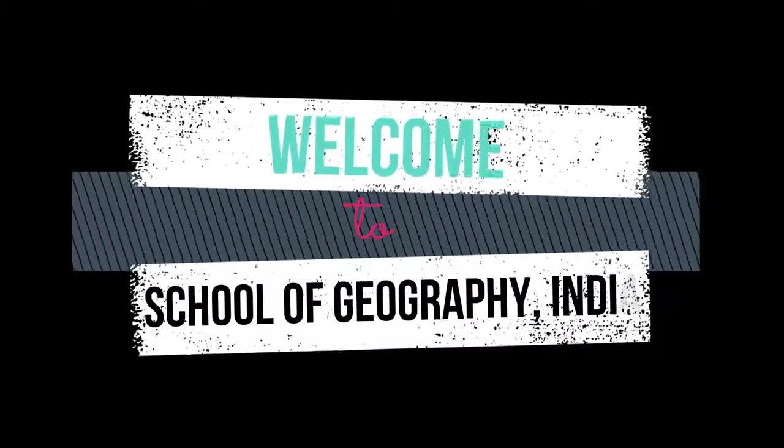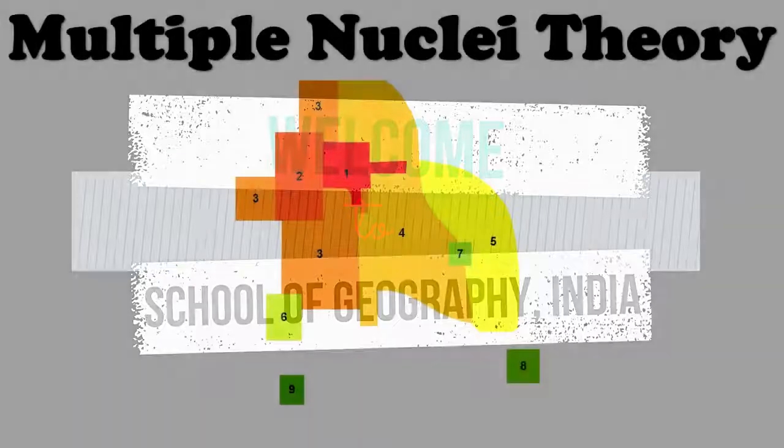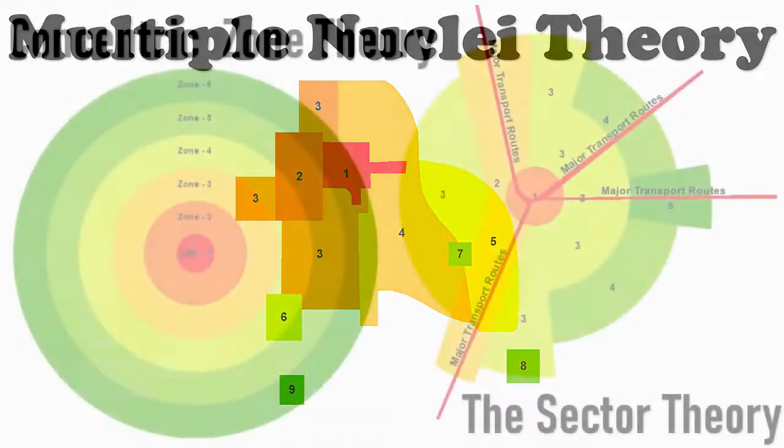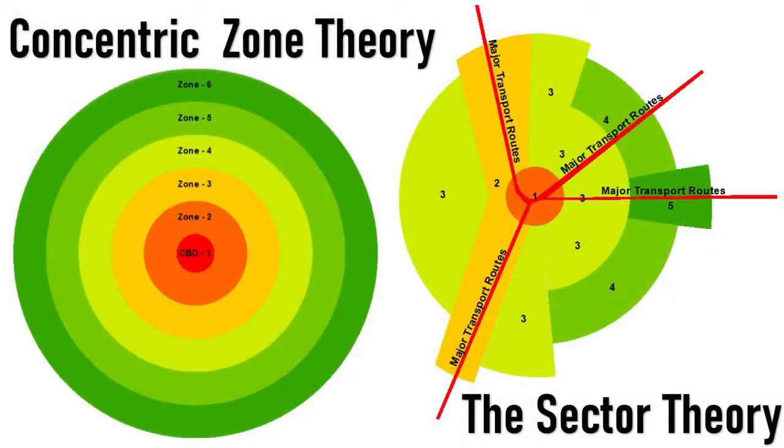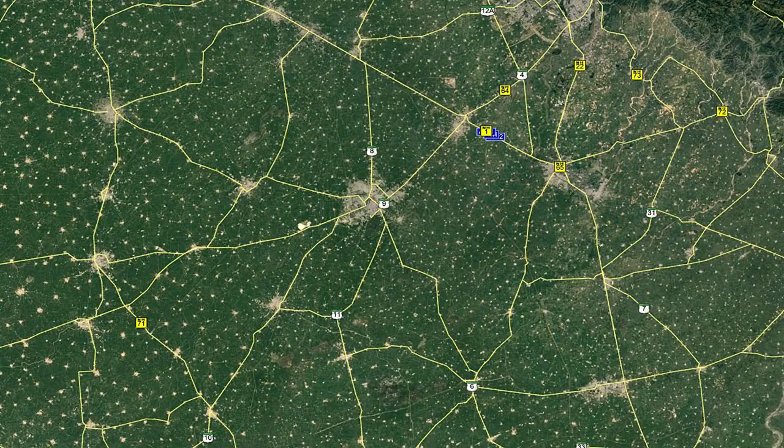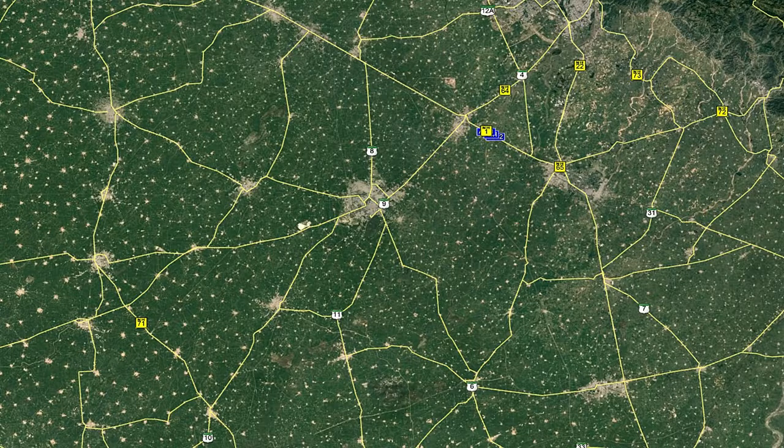Welcome to our channel, School of Geography India. This is a brief description of the Multiple Nuclei Theory of hierarchy of central functions and places. The concentric and sector theories have the advantage of essential simplicity, but actually patterns of urban land use are generally far more complex and varied than either model would suggest.